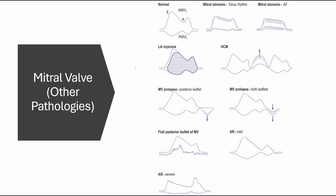This is mitral valve and other pathologies through the M-mode. The top three we already spoke about. In left atrial myxoma, the opening of the mitral valve is filled in with the mass. Here in HOCM, we have the SAM. In systole, the anterior leaflet mitral valve hits the septum.